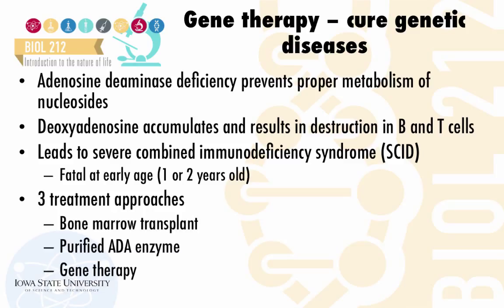Currently there are three treatment approaches to cure this disease. First is a bone marrow transplant, because the bone marrow contains precursors or stem cells that lead to the production of many different immune cells, including B and T cells. So if you take bone marrow from a healthy individual and supply it to a patient that has ADA deficiency, you can potentially cure the deficiency.